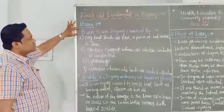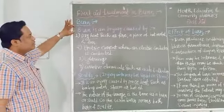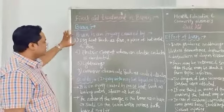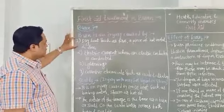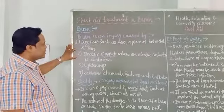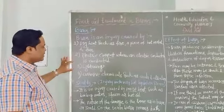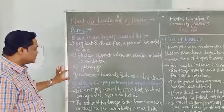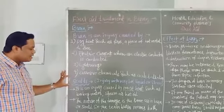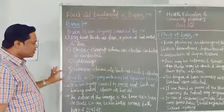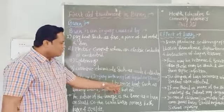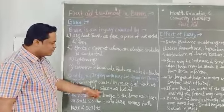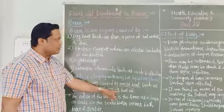The difference is: burn is caused by dry heat, electric current, lightning, and corrosion chemicals such as acid and mercury. Whereas scald is an injury caused by moisture such as boiling water, steam, or hot oil.